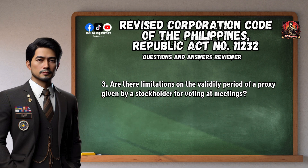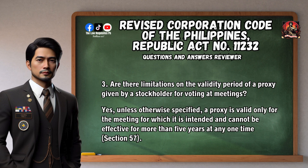Question 3: Are there limitations on the validity period of a proxy given by a stockholder for voting at meetings? Yes. Unless otherwise specified, a proxy is valid only for the meeting for which it is intended and cannot be effective for more than five years at any one time. Section 57.